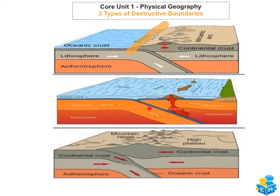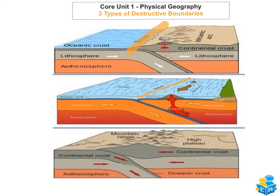When two oceanic plates collide, subduction does happen — the older and heavier plate will be the one that subducts beneath the lighter, younger plate. You can see in the diagram that the plate on the left has been forced under, because it is the heavier rock. A key feature that forms is a trench — it will be very narrow and very deep, deeper than in the oceanic-continental case.